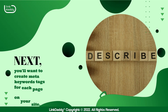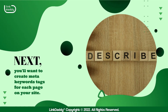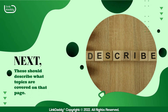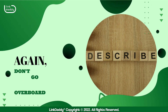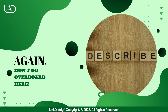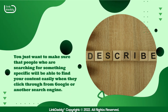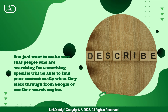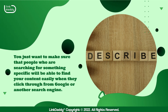Next, you'll want to create meta keywords tags for each page on your site. These should describe what topics are covered on that page. Again, don't go overboard here. You just want to make sure that people who are searching for something specific will be able to find your content easily when they click through from Google or another search engine.